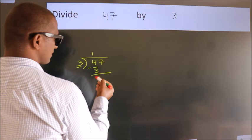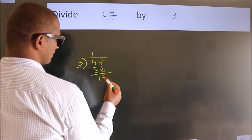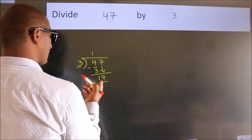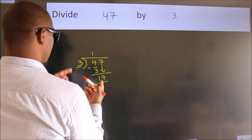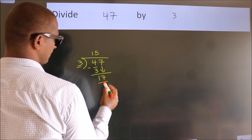After this, bring down the beside number. So 7 down. So 17. A number close to 17 in the 3 table is 3 fives 15.